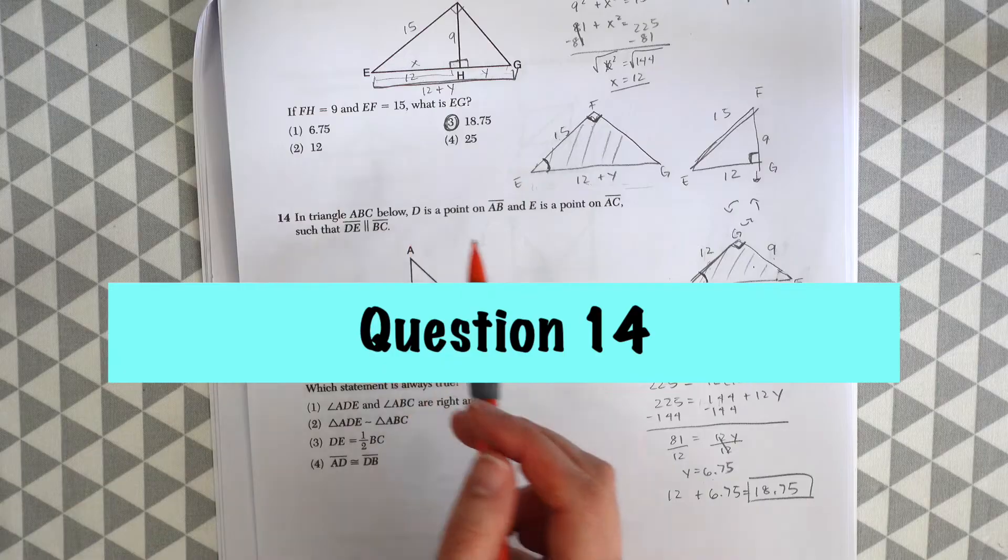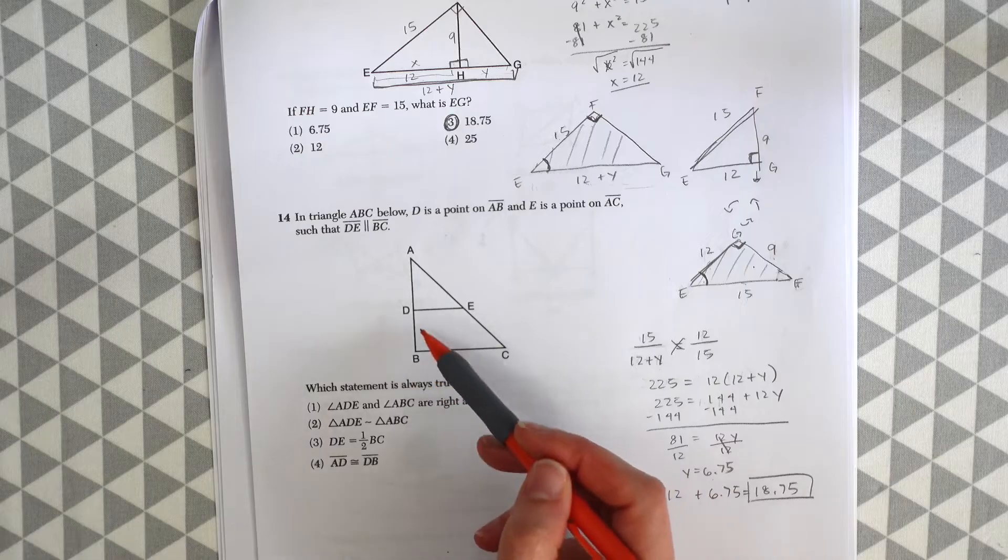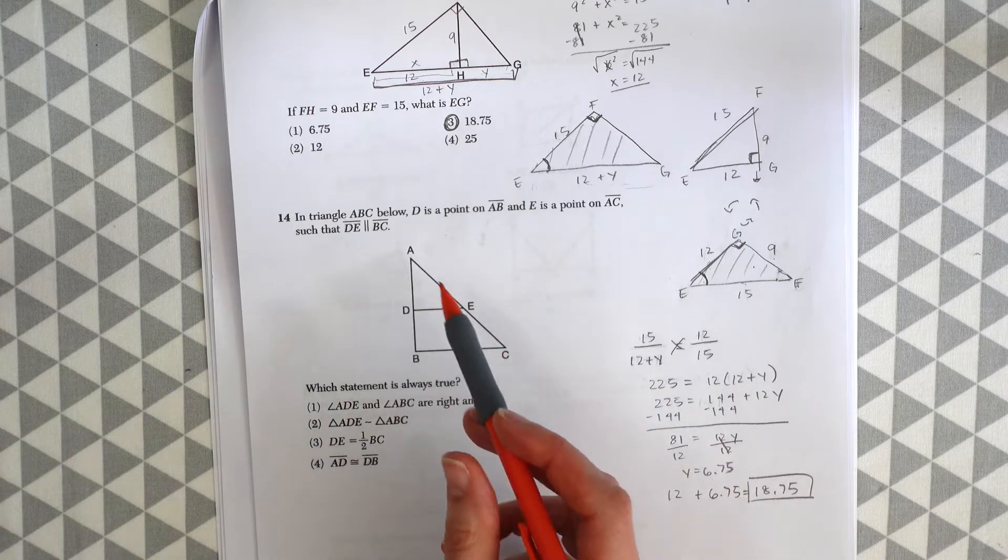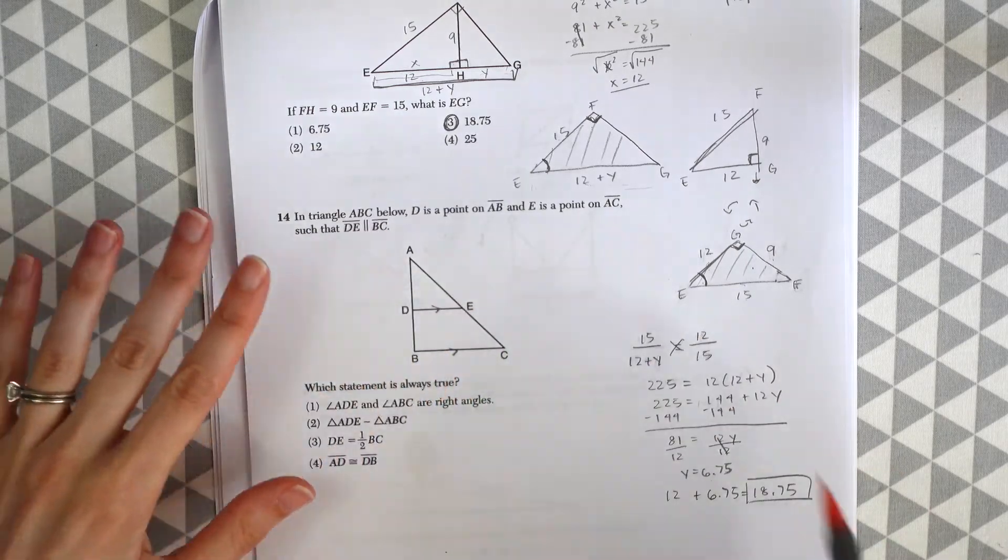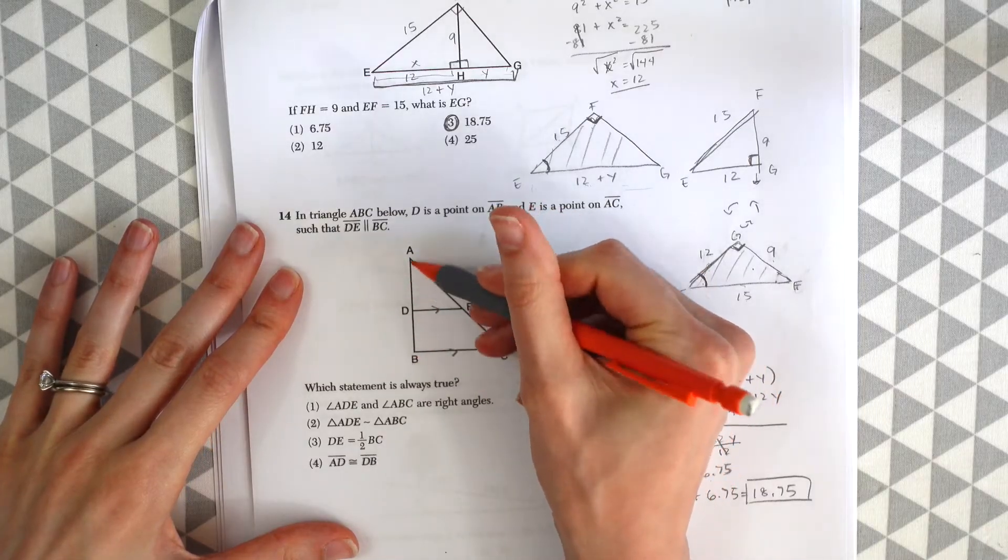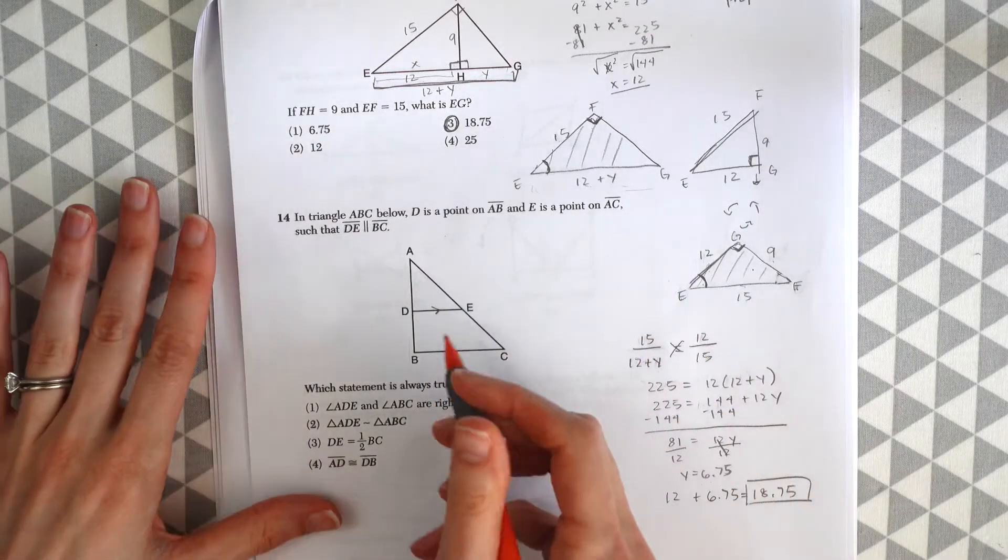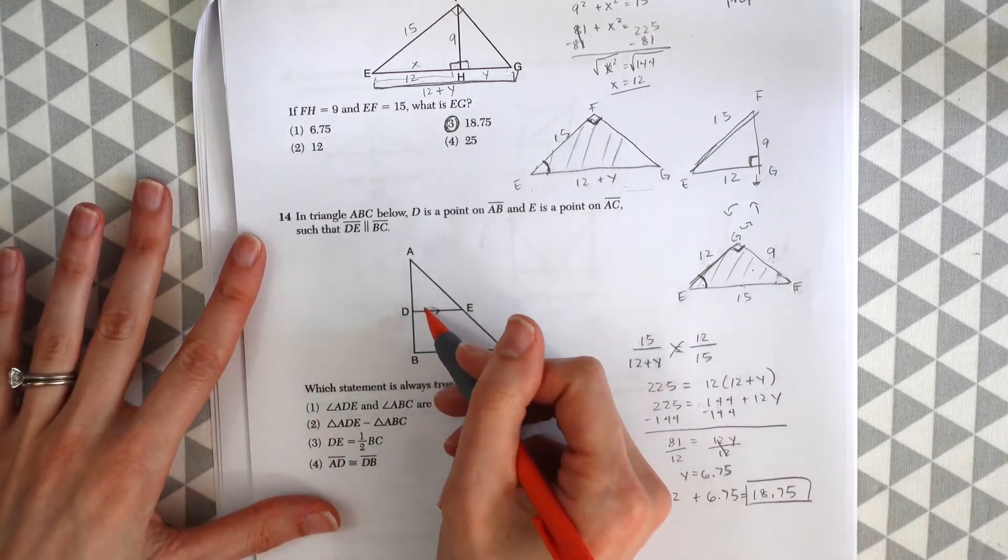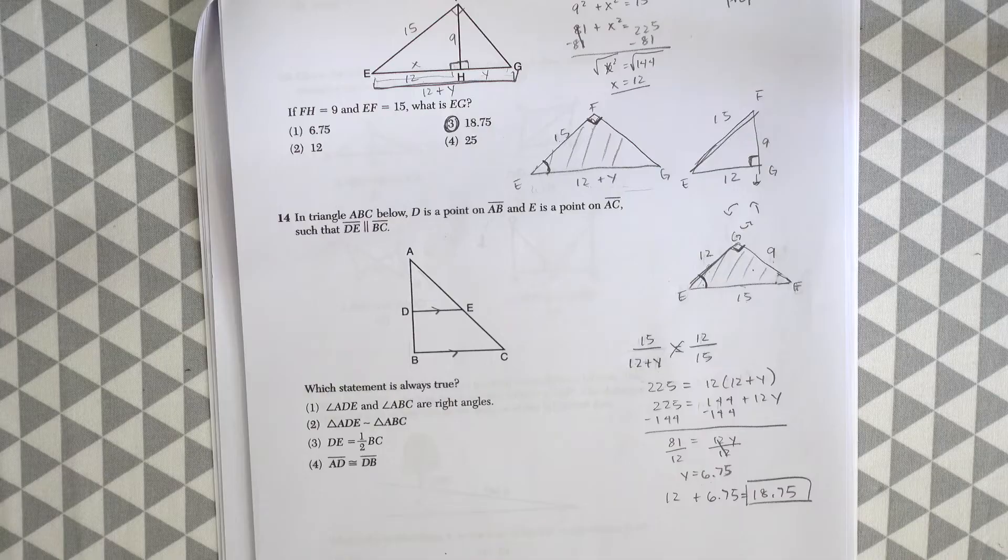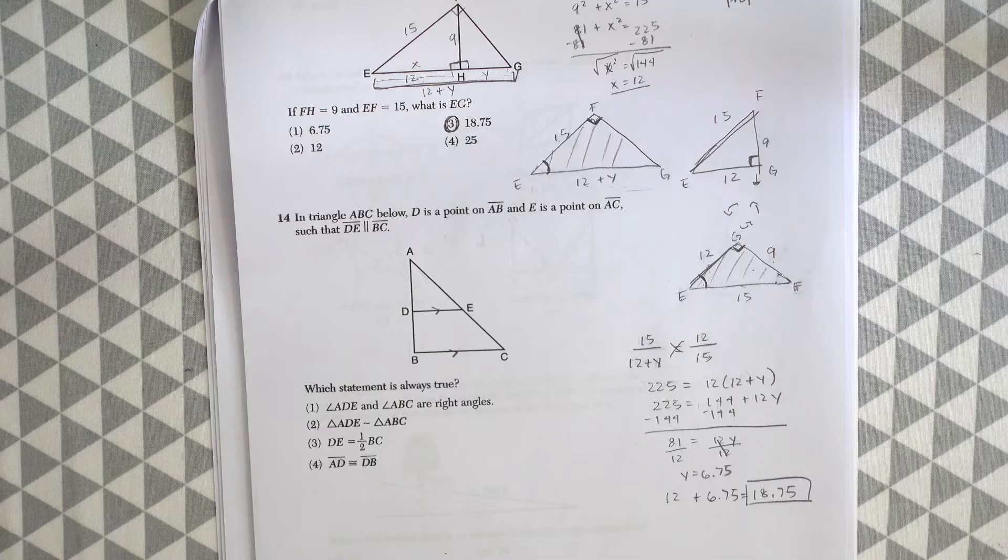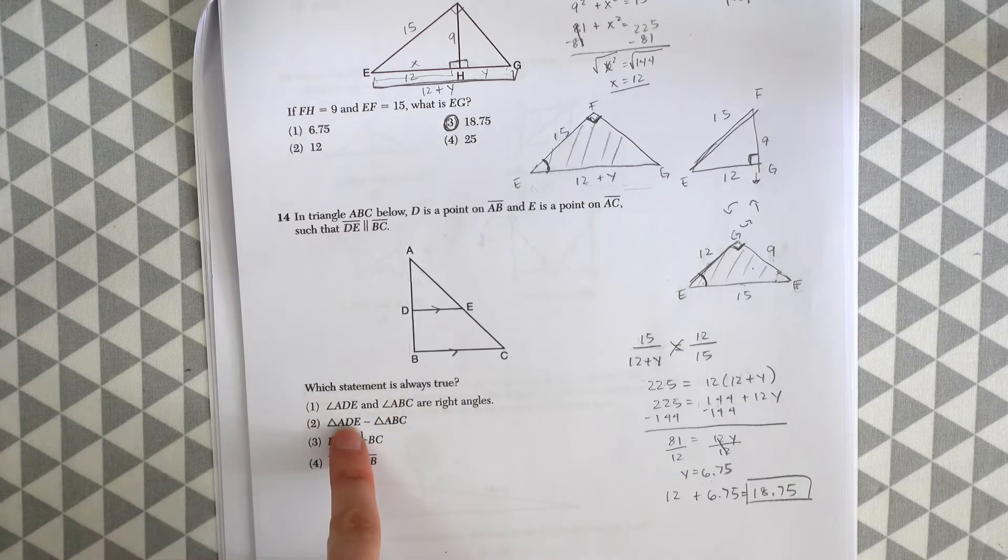Question number 14. In triangle ABC below, D is a point on AB and E is a point on AC such that DE is parallel to BC. So we have these two parallel lines and then notice there's lines coming out of it. Even though it's a triangle, this can be thought of as a transversal where we have different angles that are equal to each other, like alternate interior angles and alternate exterior angles. So keep that in mind when we look at the following answer choices. So they want to know which statement is always true.